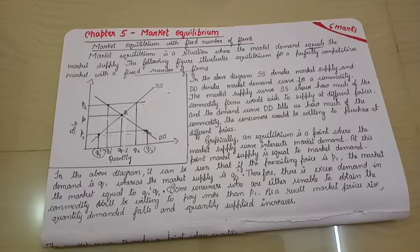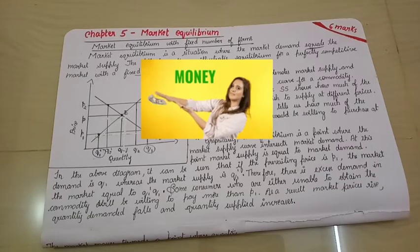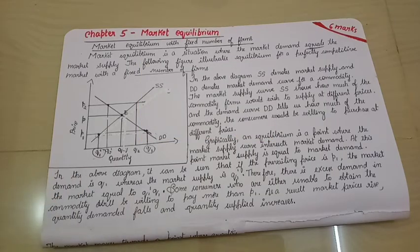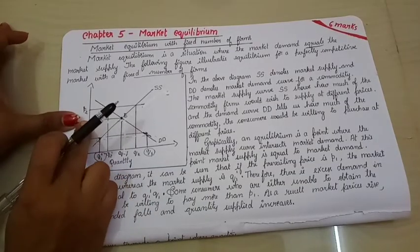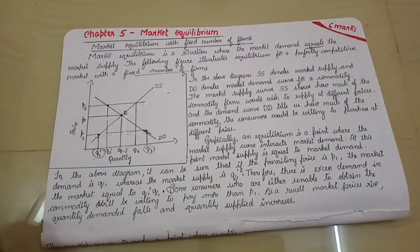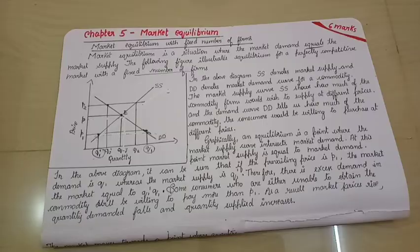So usually in such situations when there is excess demand, what happens? Supply is less, demand is more. Some consumers who are unable to obtain the commodity will try to pay more. So at that time the price will increase. When price increases, demand decreases and supply increases, and it reaches the equilibrium position. So this is how when the price falls, the market will reach its equilibrium stage.